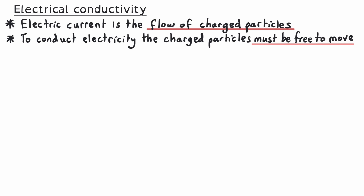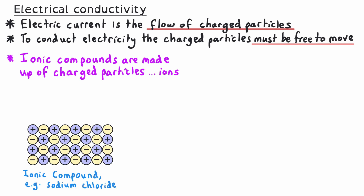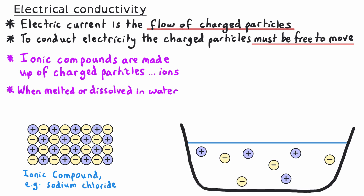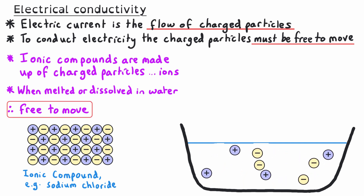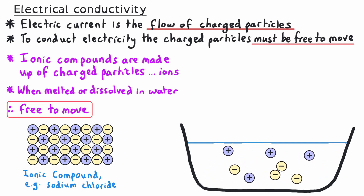Electric current is the flow of charged particles, so to conduct electricity a substance needs to have charged particles in its structure, and those particles must be free to move. Ionic compounds, which are made up of positive and negatively charged ions, do not conduct electricity as a solid. However, when melted or dissolved in water, the forces between the ions have been weakened and they are no longer held in the rigid solid three-dimensional giant ionic lattice.